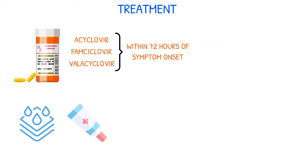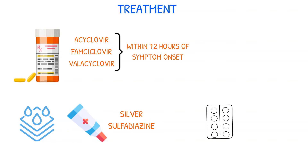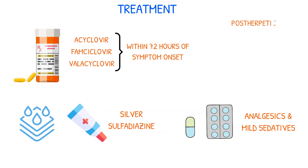Wet compresses and the application of silver sulfadiazine may be used for ruptured vesicles. Pain relief can be achieved through the use of analgesics and mild sedatives at bedtime. In cases where postherpetic neuralgia persists, gabapentin may be prescribed.